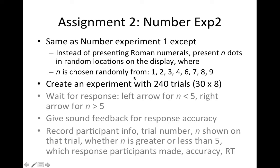Just like in Experiment 1, you're going to create an experiment with 240 trials, so there should be 30 trials of each of these 8 conditions. You'll wait for participants to make the response, record their speed and accuracy, and all the other parameters.